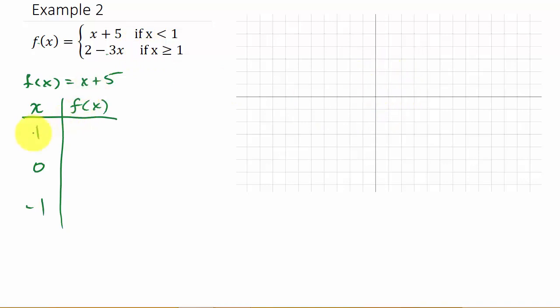So the thing that you do when you choose these values, when you choose the values for each function, you want to choose these values here for each one. Even though this 1 is not included here, we still choose it. And I'll show you what happens when we start to graph it.